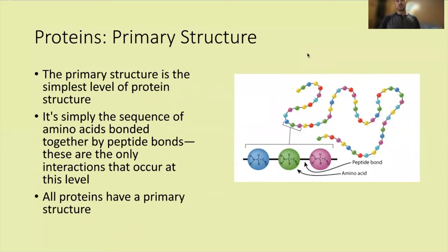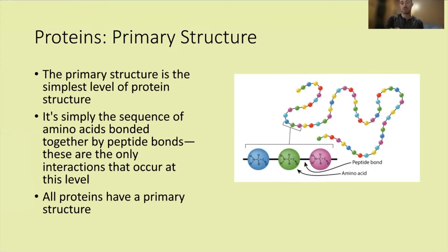The first structure is the primary level — the simplest level of protein structure. It is simply the sequence of amino acids bonded together by peptide bonds, and these are the only interactions that occur at this level. Peptide bonds are only present at the primary level. All proteins have a primary structure because the definition of a protein is that it's made up of amino acid monomers.